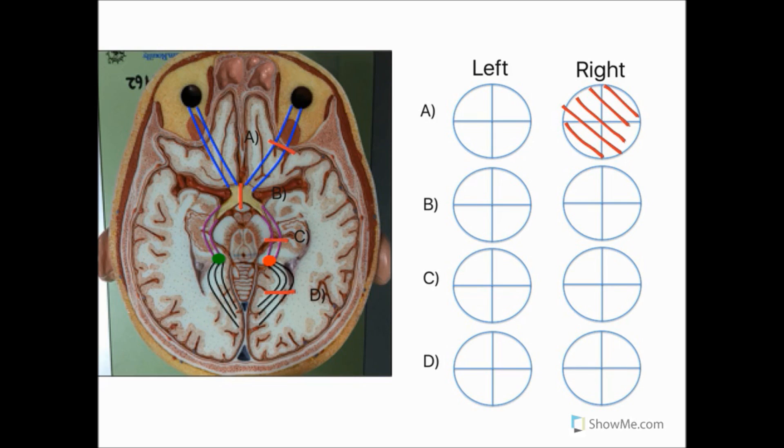Next we have a lesion in the optic chiasm, and this is B. For example, this might be due to a compression from a large pituitary tumour. Here we would get damage to fibres that have originated from the nasal retinal fields of both eyes. And this would result in a loss of vision in the temporal visual field of both eyes. And this condition is known as bilateral or bitemporal hemianopia.